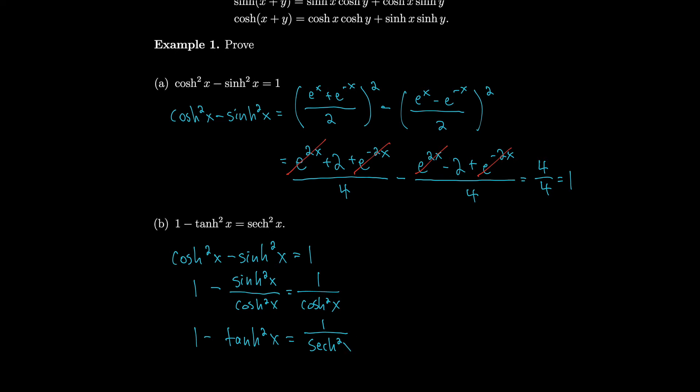And 1 over cosh² is the definition for sech². So when we divide by cosh², the right-hand side becomes sech². So we get 1 − tanh² = sech².